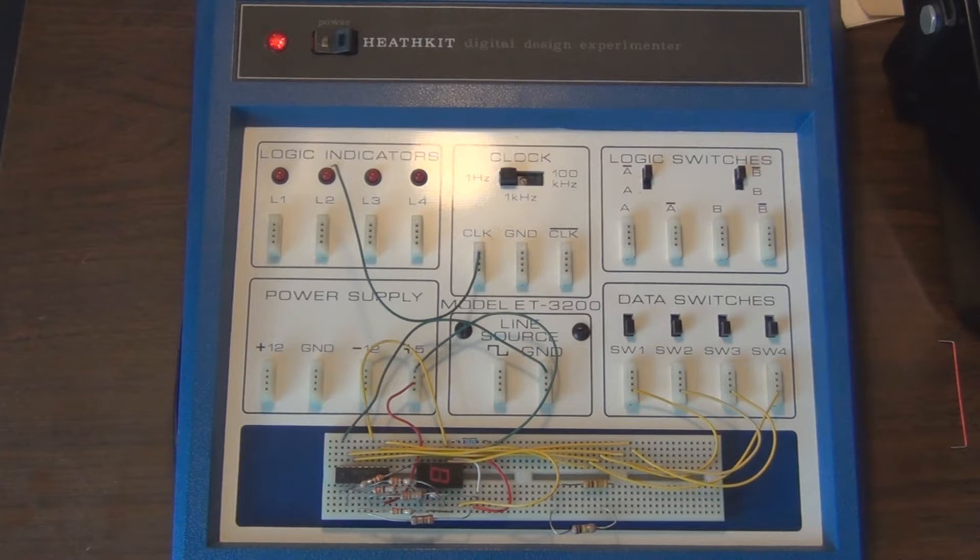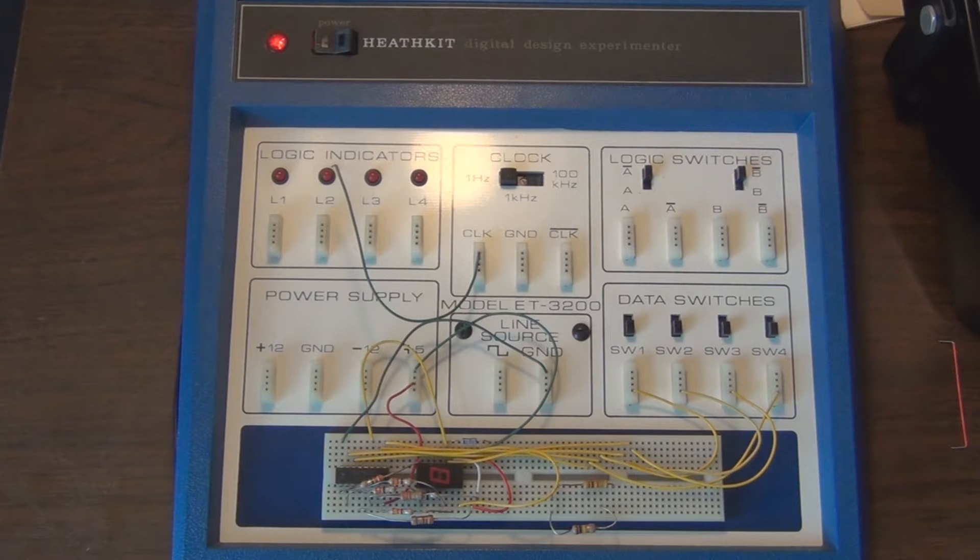Everyone, this is the Heathkit digital design experimenter, a nice little platform to get you started on learning digital electronics. There used to be Heathkit stores you could go in, buy this assembled or buy it as a kit and put it together.